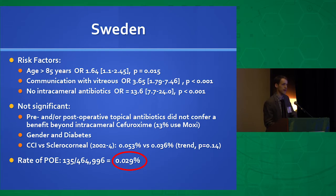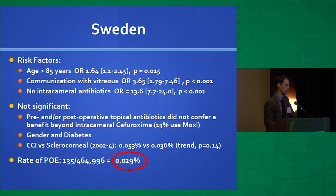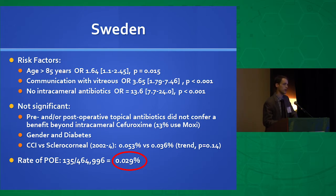Similarly, Sweden found the same things. Additional risk factors were age greater than 85, communication with the vitreous cavity, and absence of intracameral antibiotics. Things not found to be significant were gender, diabetes, and clear corneal versus scleral corneal incisions. Preoperative antibiotics weren't found to make a difference either. Overall, the rate of endophthalmitis was very low at 0.029%, over about 500,000 cases.